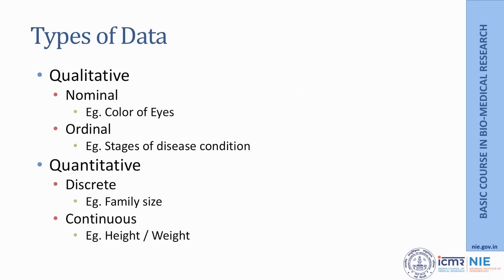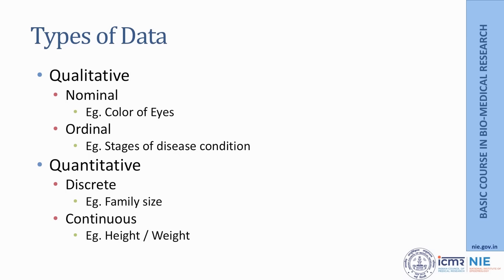Data can broadly be classified into qualitative and quantitative data. Qualitative data, as the name suggests, we cannot quantify — it is based on some sort of quality. Qualitative data can be nominal data or ordinal data. Examples of nominal data are color of eyes, different regions of a city, and so on. Ordinal data are data which can be arranged in some order, such as stages of a disease condition.